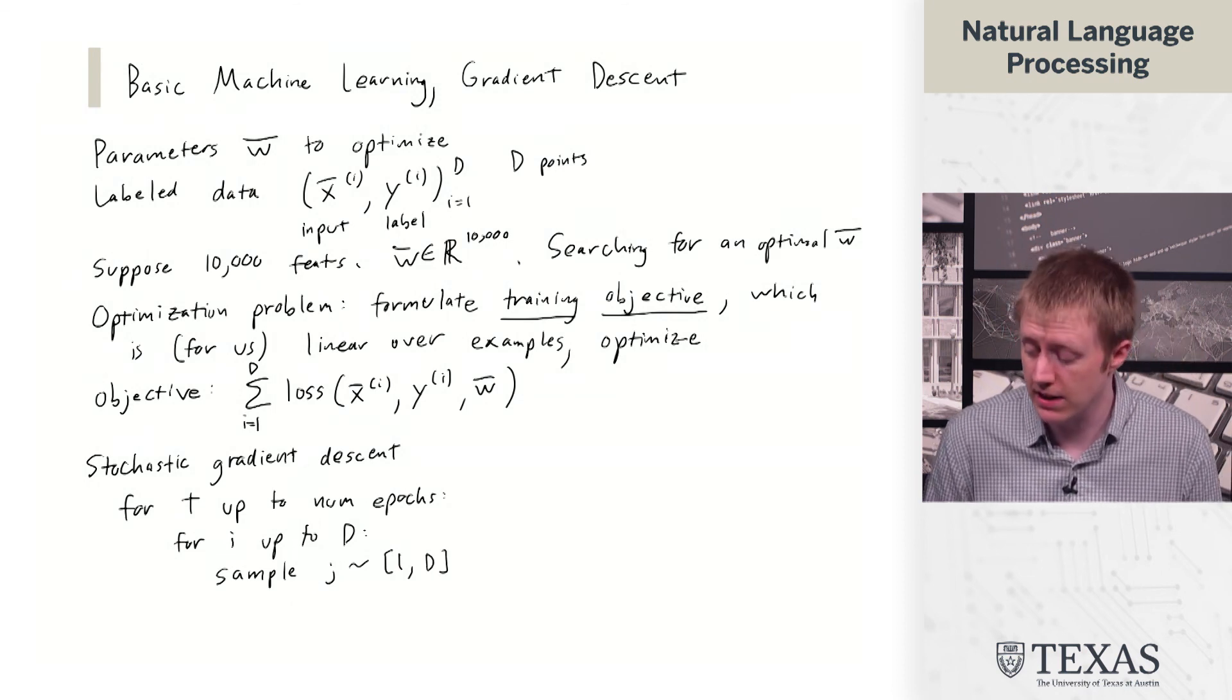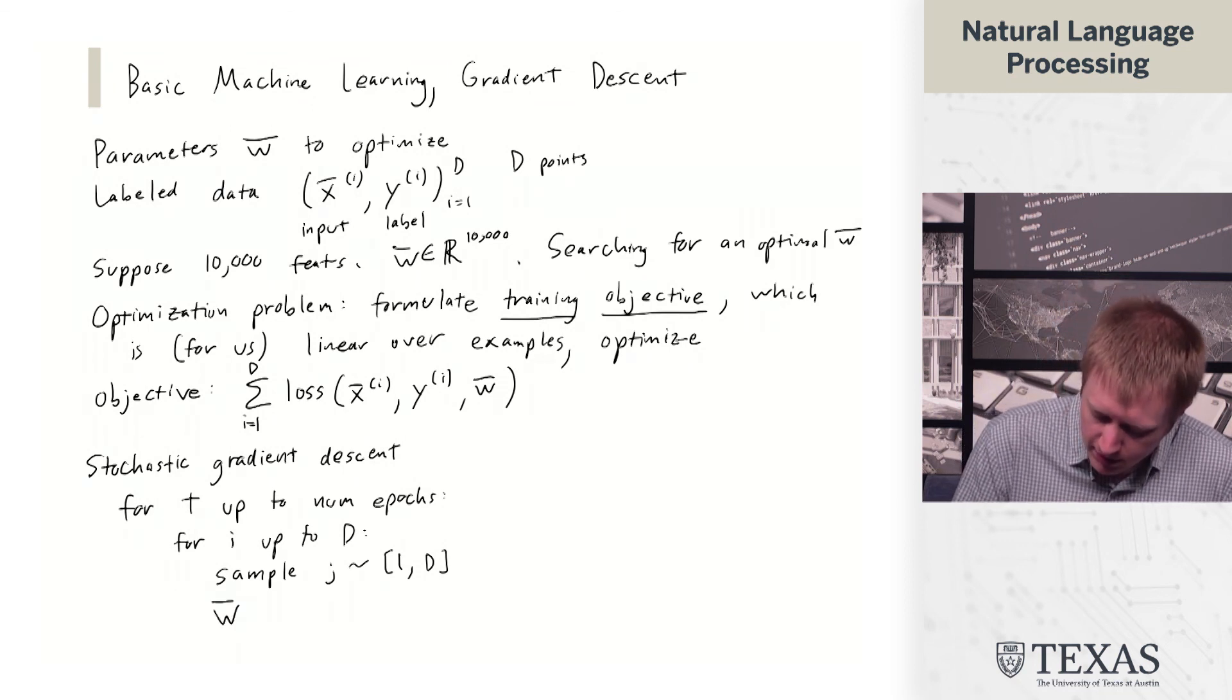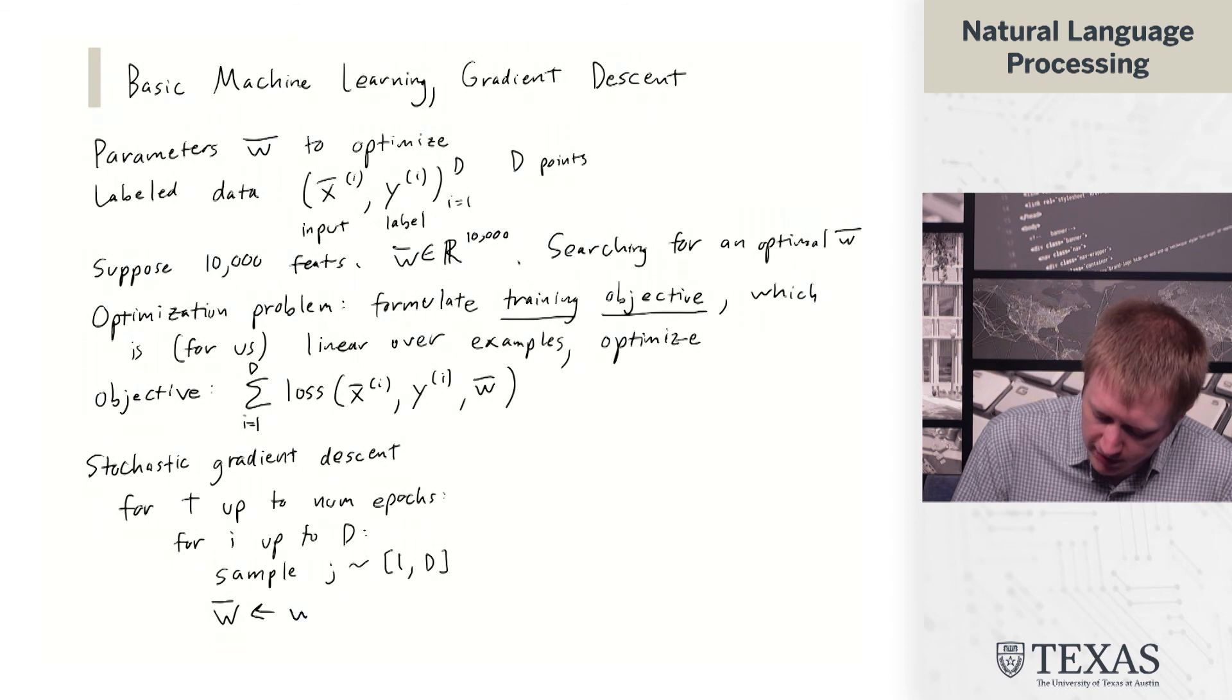So basically, we are picking a data point and then we are applying an update to our weight vector, which looks like the following.